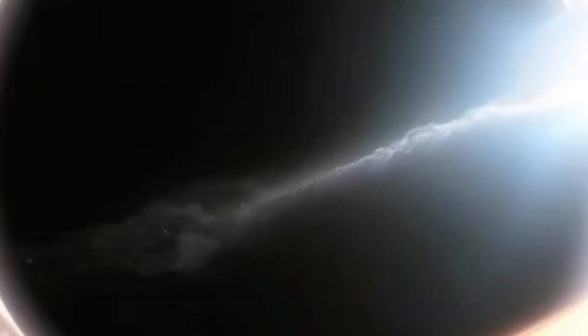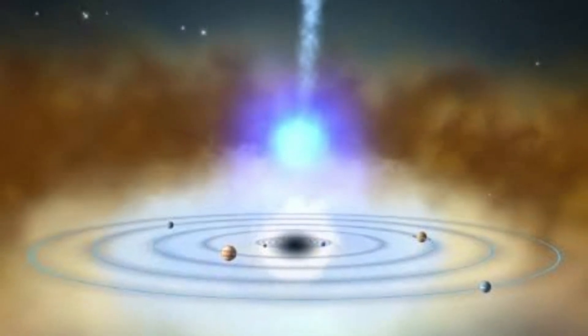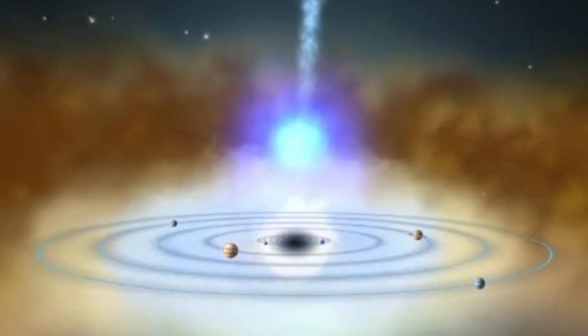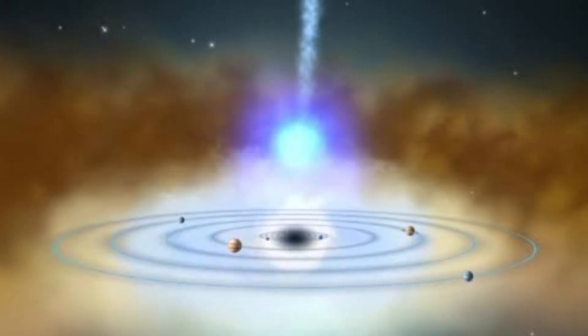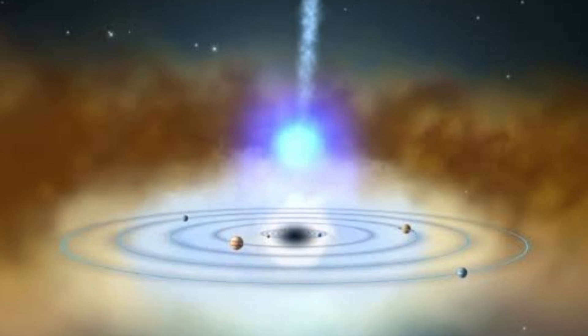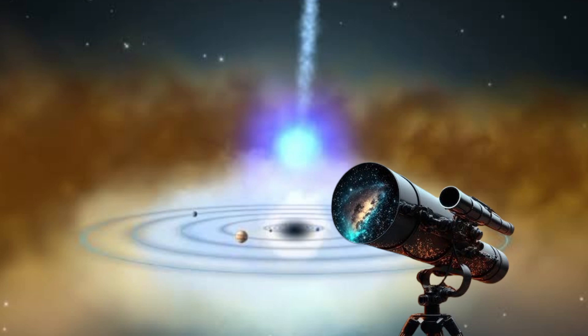Now, you might be wondering, if black holes are black, how do scientists even know they're out there? The answer lies in the gravitational tug-of-war they play with surrounding stars and gas. By observing the behavior of these stars, scientists can detect the presence of a hidden black hole. When a black hole and a star get cozy, they emit high-energy light that's invisible to our eyes. To catch this cosmic drama, scientists use satellites and space telescopes specially designed to detect this high-energy light.